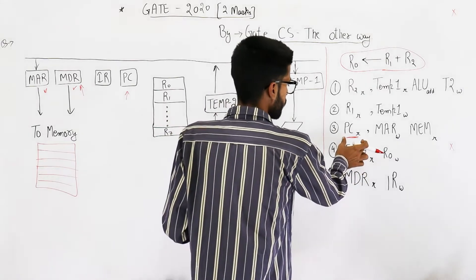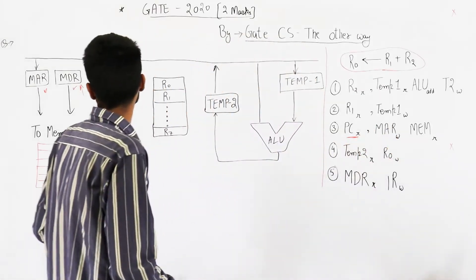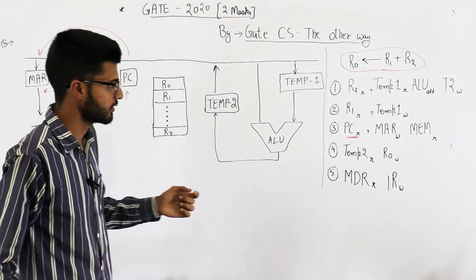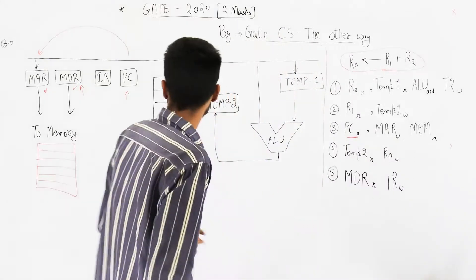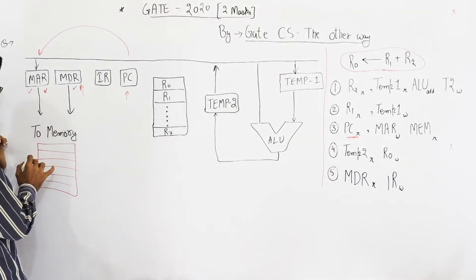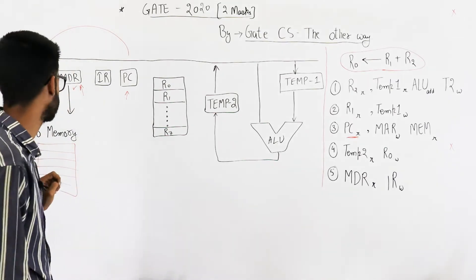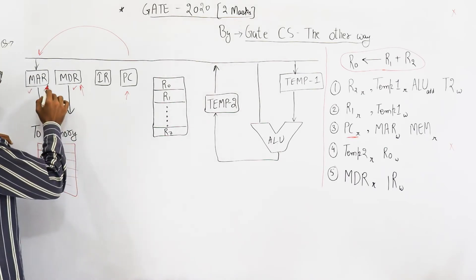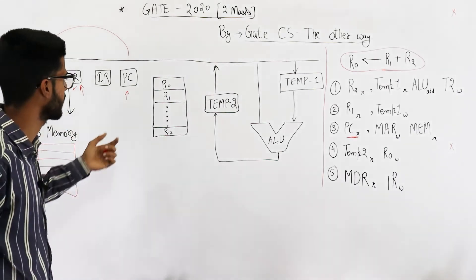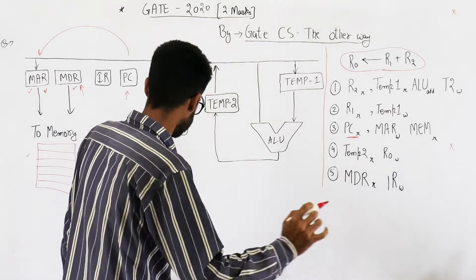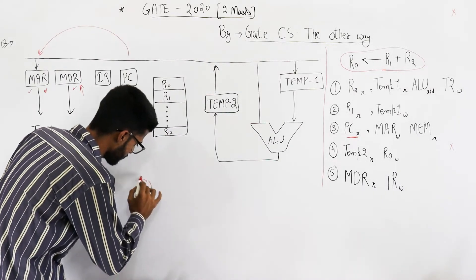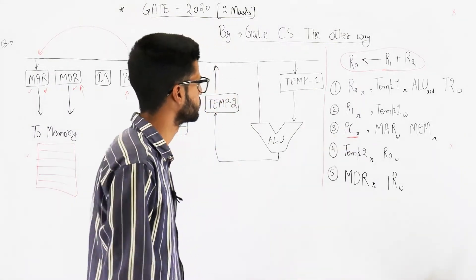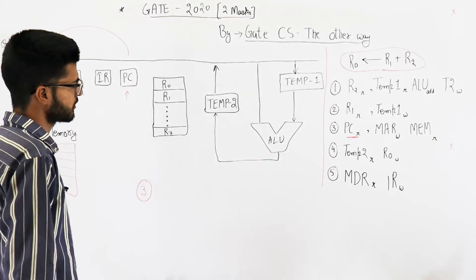Now we've loaded the instruction address into MAR. The second part of the fetch is issuing a read signal to memory, so memory is read at the address now stored in MAR — which is the address that was in the PC. So step 3 in the given list is the first micro-operation to execute.